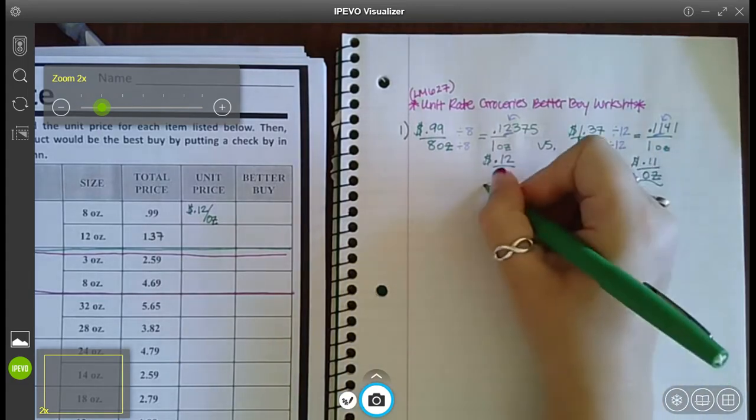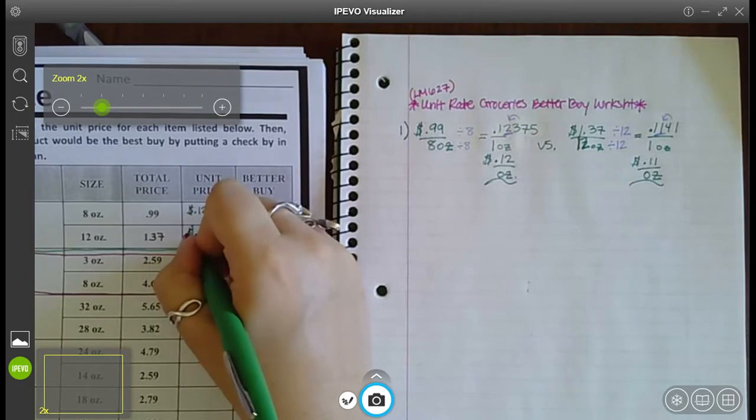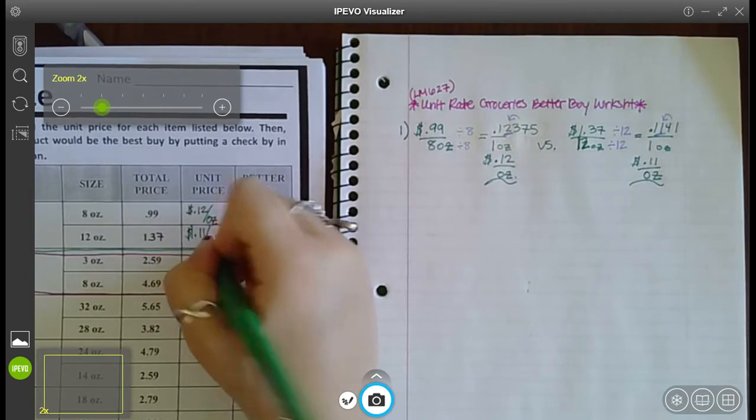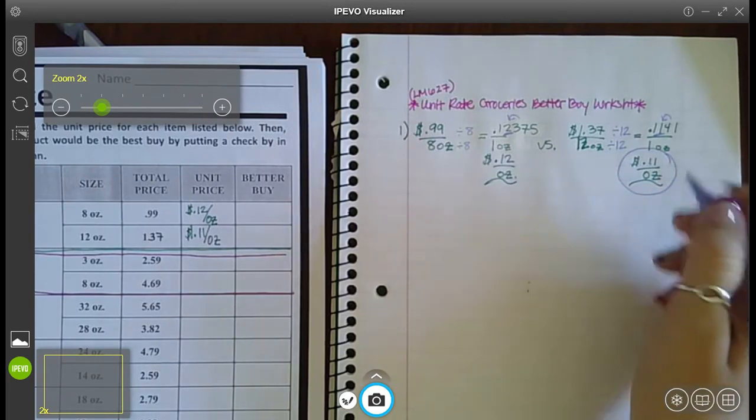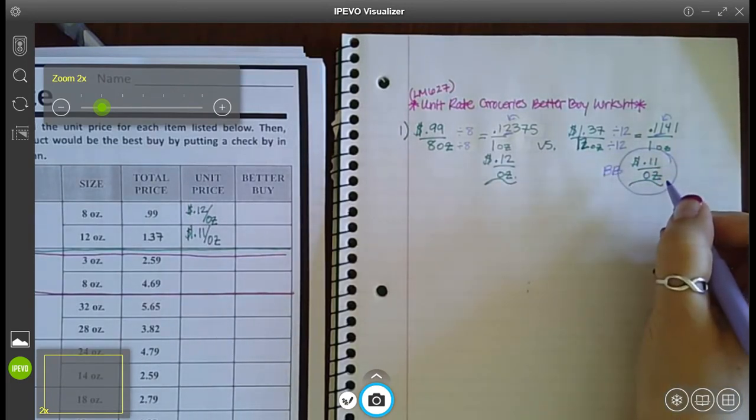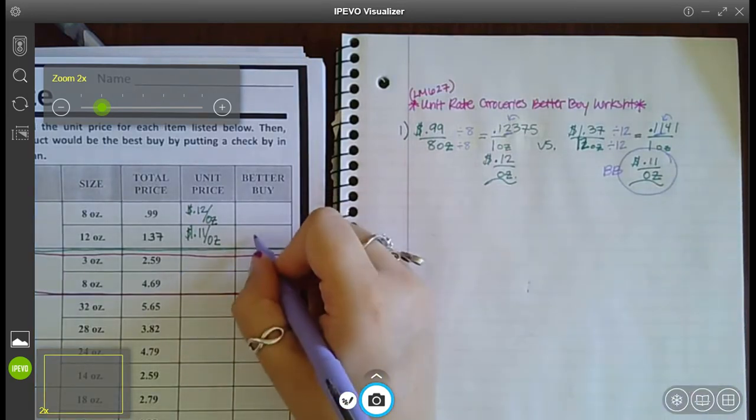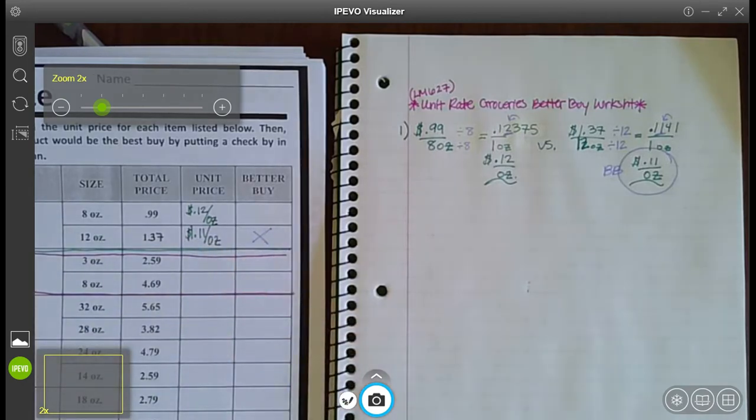So what's the better buy? 12 cents per ounce or 11 cents per ounce? Obviously you'd rather spend 11 cents, that's the better buy, because even a penny saved is still a penny saved, right? So I'm going to put that 11 cents was the better buy. So I put a check mark in that column for the 11 cents one. Let's try another one.